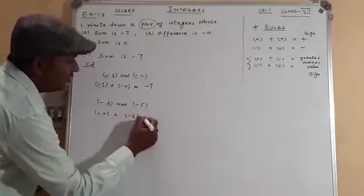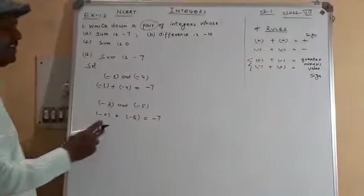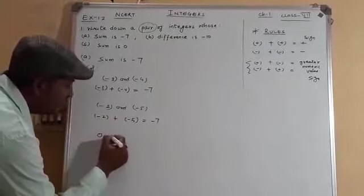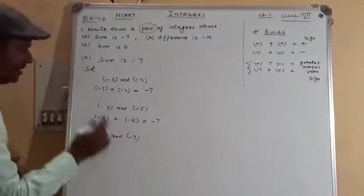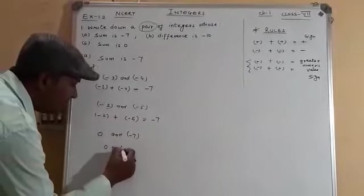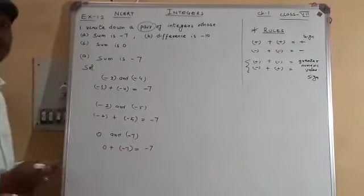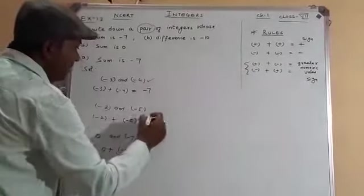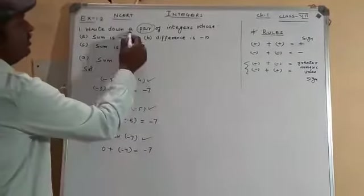You can take other examples. You can take 0 and -7: 0 + (-7) = -7. And so on. They have asked for only one pair, but you can make more integers. The first part is done.